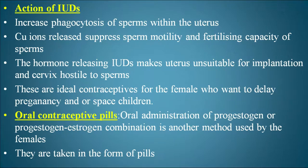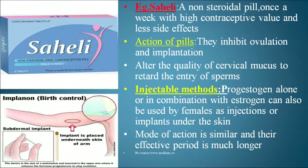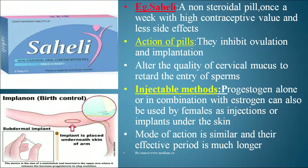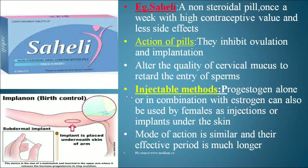Oral contraceptive pills contain progestogen or a progestogen-estrogen combination. An example is Saheli — a non-steroidal once-a-week pill made by CDRI Lucknow (Central Drug Research Institute), with high contraceptive value and fewer side effects. Pills inhibit ovulation and implantation and alter the quality of cervical mucus to retard sperm entry. In the injectable method, progesterone alone or combined with estrogen can be used as injections or implants under the skin. Their mode of action is similar to pills but their effective period is much longer. One brand of implant is Implanon.